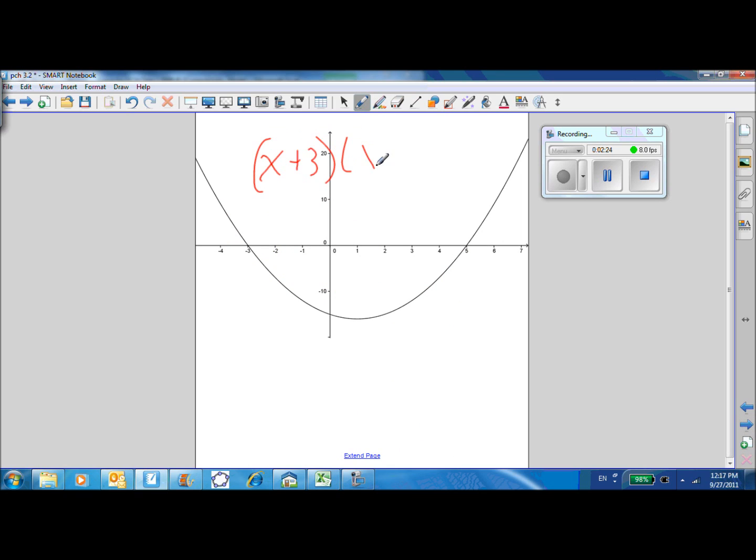We're trying to solve X plus 3 times X minus 5 greater than 0. Here's the way you can visually do it. Think of it as Y equals X plus 3 times X minus 5. And that's why I have graphed here, the parabola.